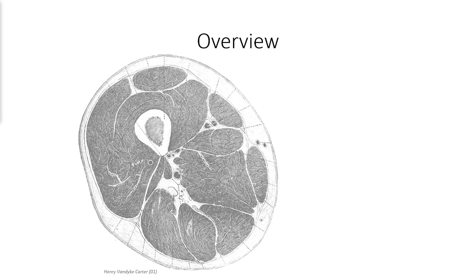The superficial fascia projects deep to form intermuscular septa that divides the thigh and leg into distinct compartments. In the case of the thigh, we can identify three distinct compartments containing muscles with a common function, vascular supply, and innervation.